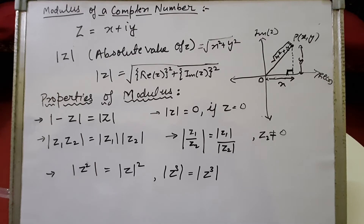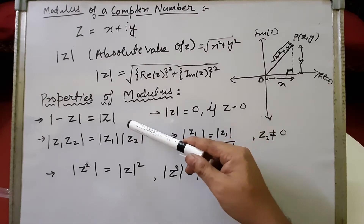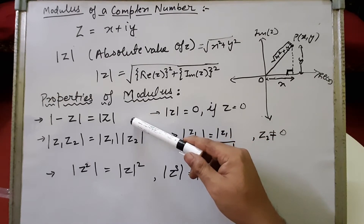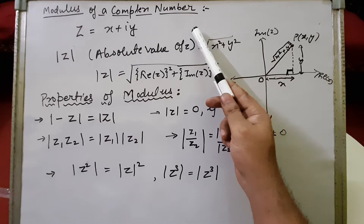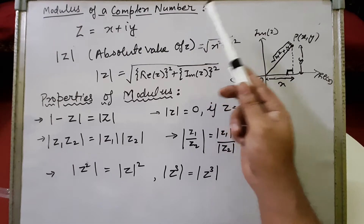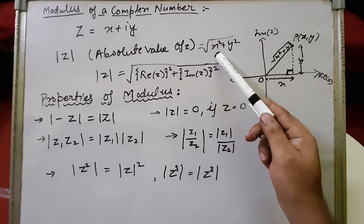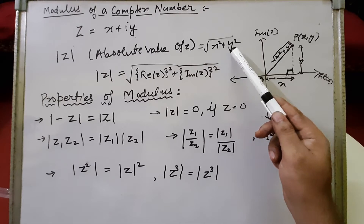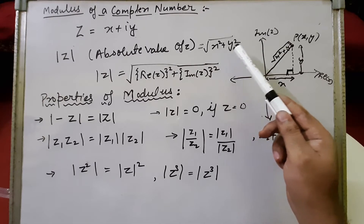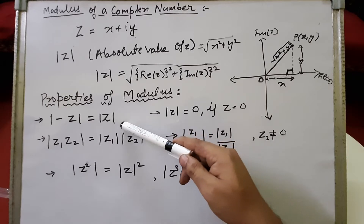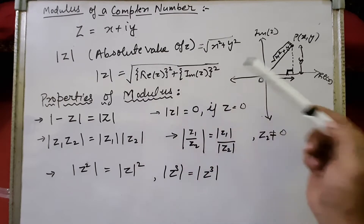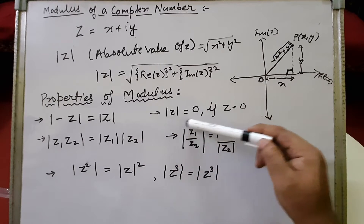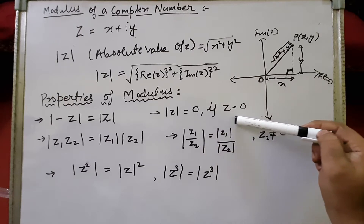Now let's see the properties of modulus. The first property says mod of minus z equals mod of z. If any complex number is x plus iy, then minus z will be minus x minus iy. Substituting, we get under root of minus x squared plus minus y squared, which equals under root x squared plus y squared — the same as mod of z. The second property: mod of z equals zero if and only if z equals zero.